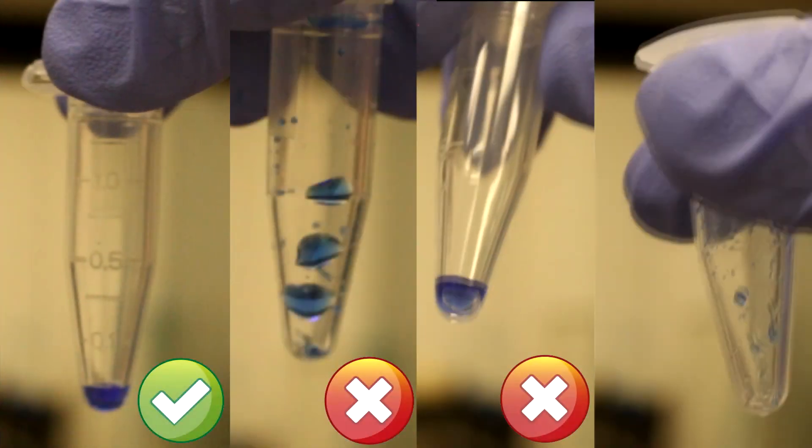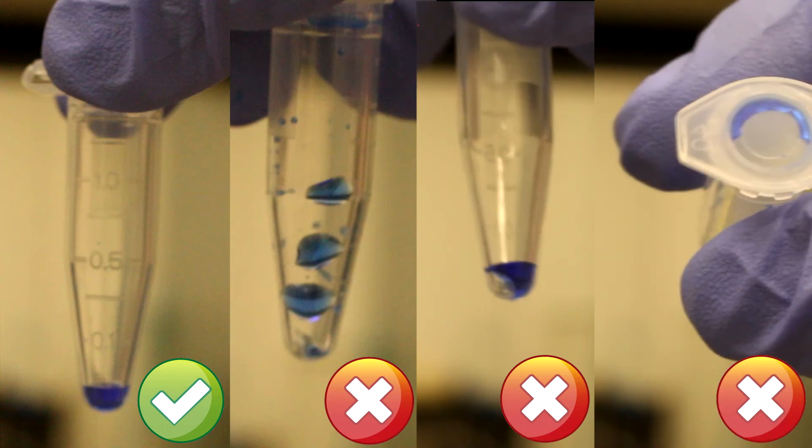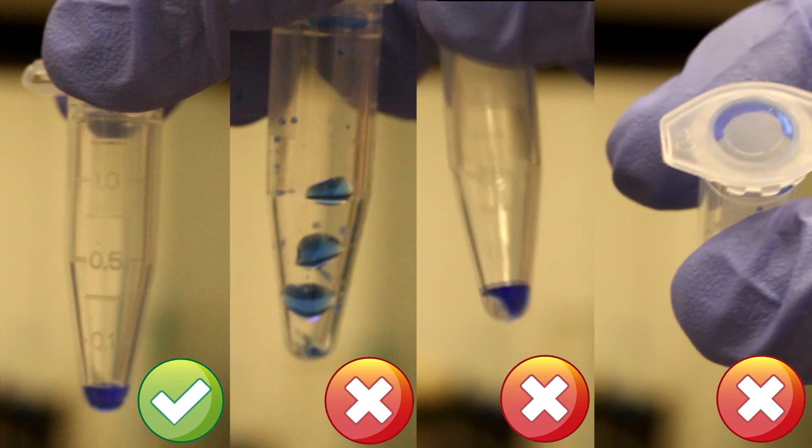Shown here is a well-contained sample compared to samples incorrectly mixed. This may happen if the samples are not pipetted to the bottom, air bubbles are introduced, or if the vial is overturned.